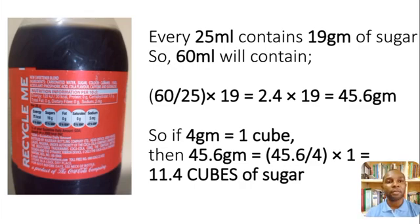So we would say, if 25cl of coke contains 19 grams of sugar, 60cl of coke would contain (60/25) × 19. 60 divided by 25 times 19, which would give us 45.6 grams of sugar. So it means in essence that for this 60cl bottle of coke, we have 45.6 grams of sugar in it.